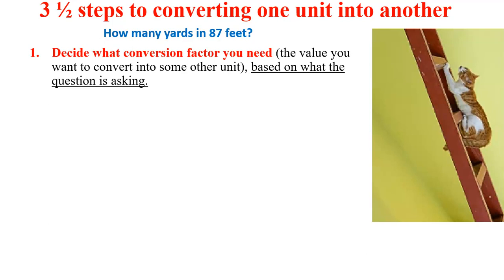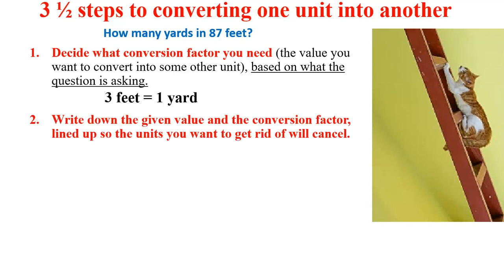The first step is to decide what conversion factor you need. That basically is not going to be a problem here because we know we're going from feet to yards, and we all know that three feet equals one yard. Oftentimes, you'll run across somewhere where you might pick the wrong conversion factor. It's a very common mistake. Second step, write down the given value and the conversion factor lined up so the units you want to get rid of will cancel. So there's our given value, there's our conversion factor, and that's all you have to do for that step. And then the last step is kind of the business end of it is cancel the terms and do the math. And so we take 87 yards, yards is the only unit that's left, and divide that by three, and that ends up being 29 yards.